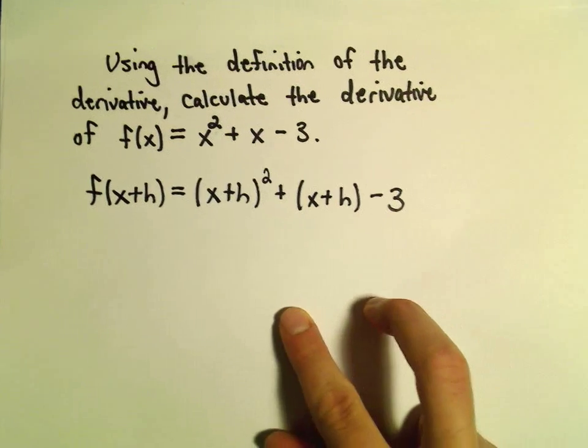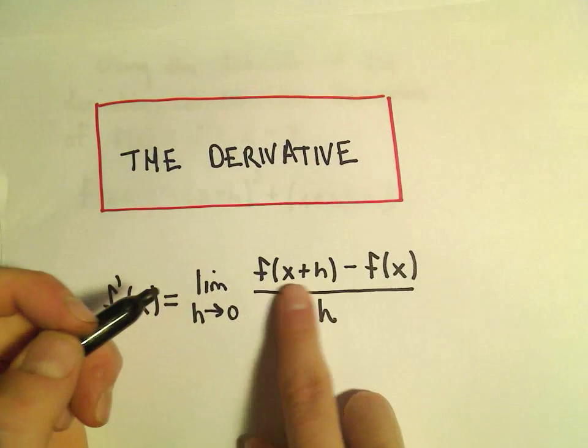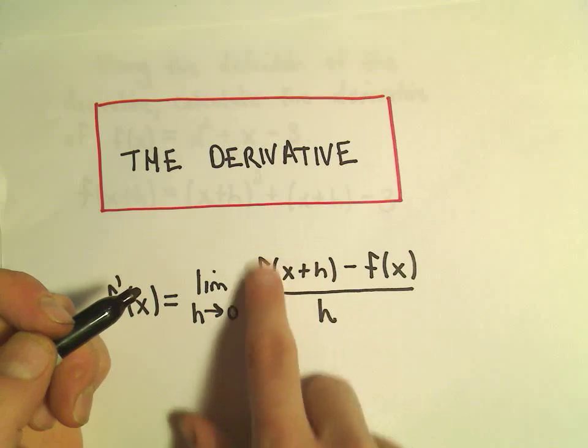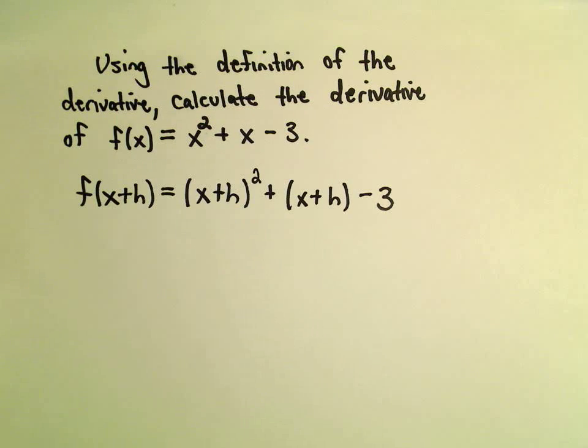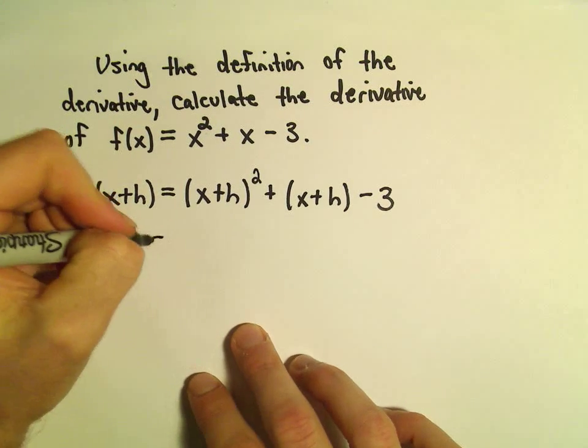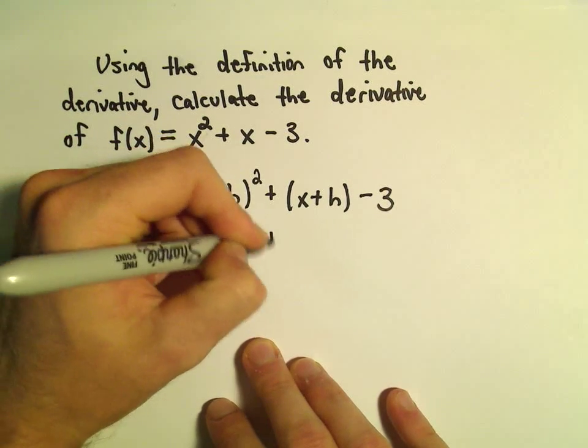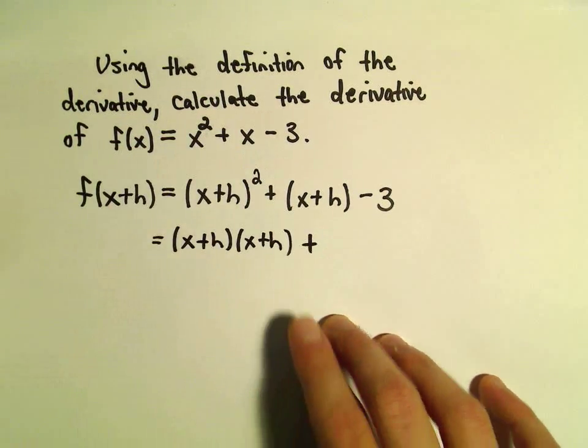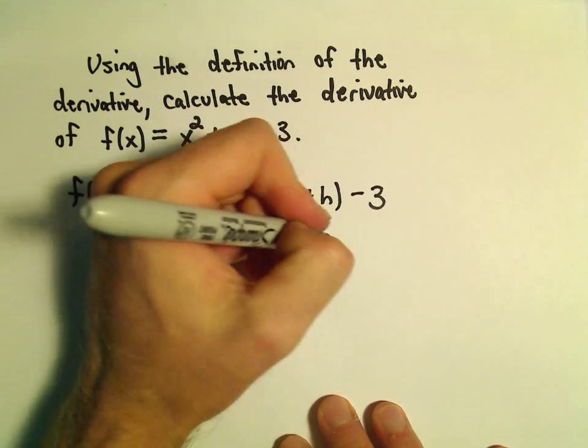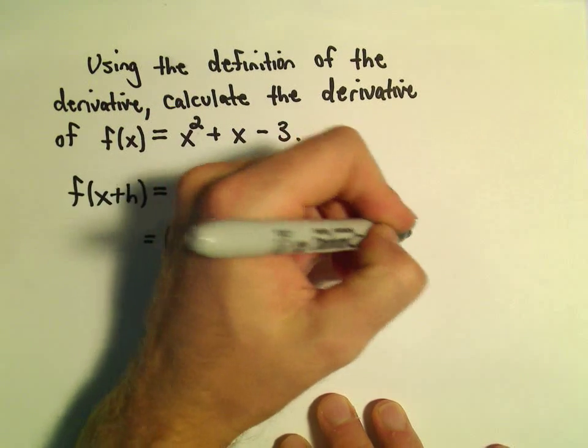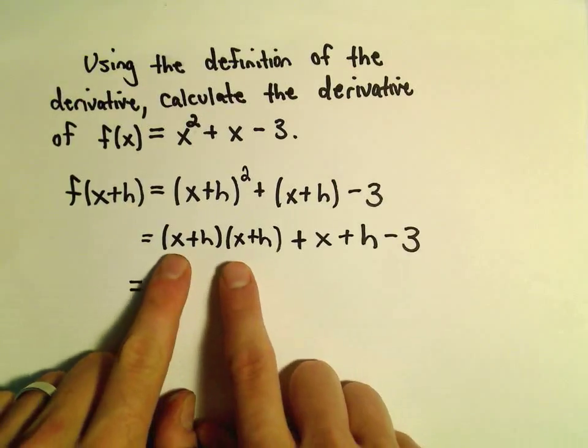So again, I'm just finding, just kind of reducing this part of the formula, just figuring out an expression for that. Well, again, be careful. We've got to foil this out. This is x plus h times x plus h. Here we can just get rid of the parentheses. We would just get positive x plus h minus 3.